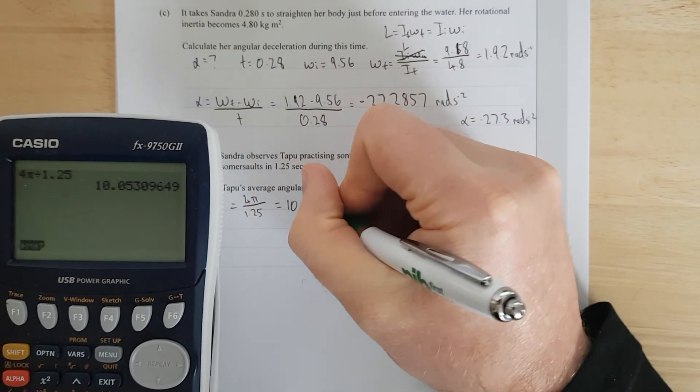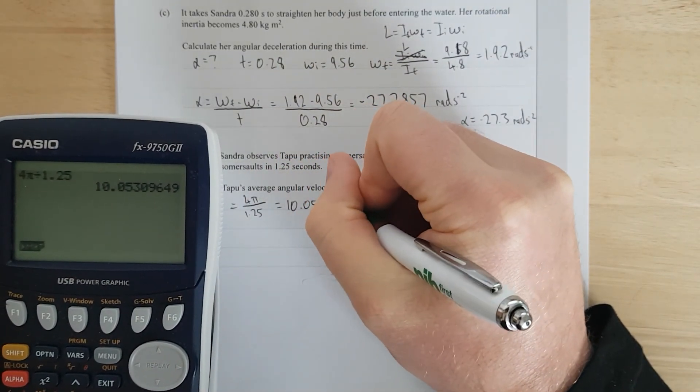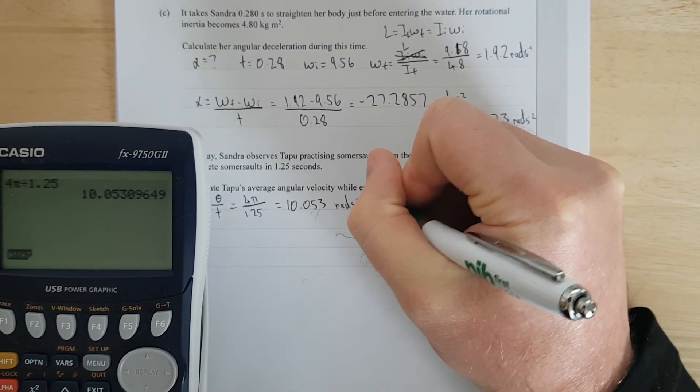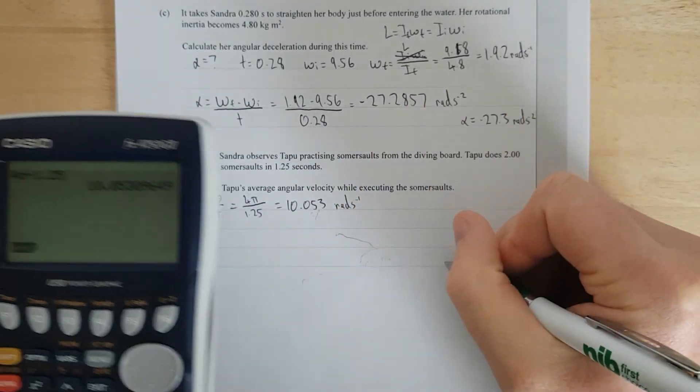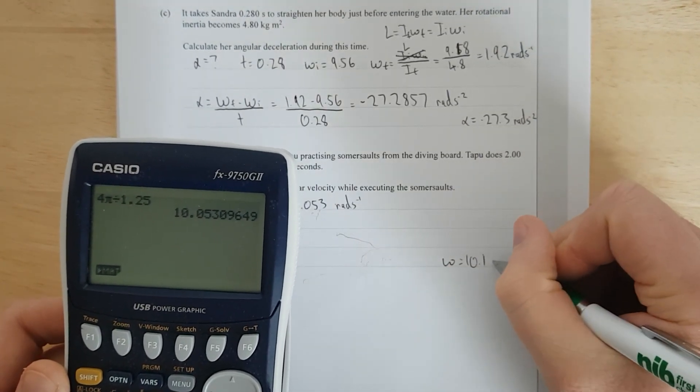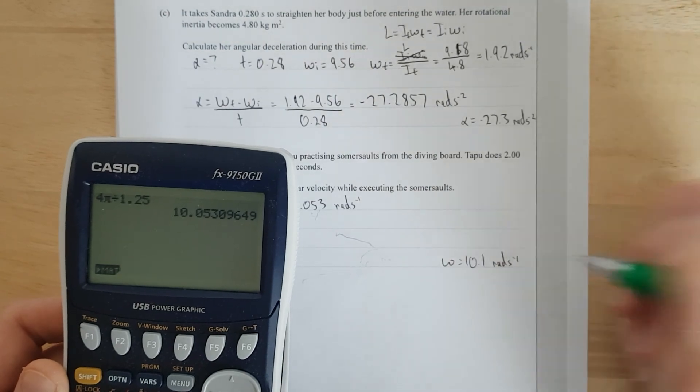Right, I'll just quickly work that out, and we get 10.053 radians per sec negative 1. Let's just check it down here, equals 10.1 rads per sec negative 1. Cool.